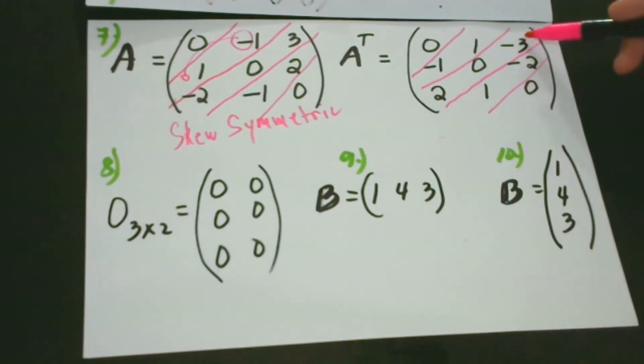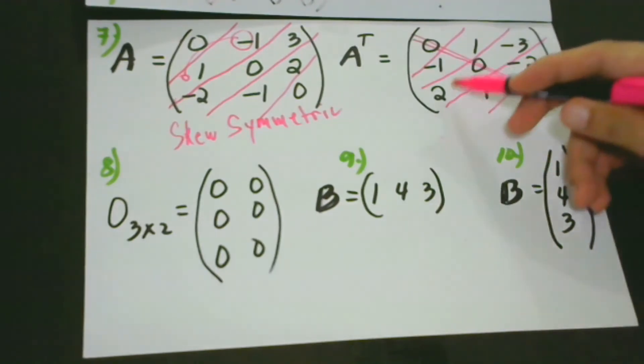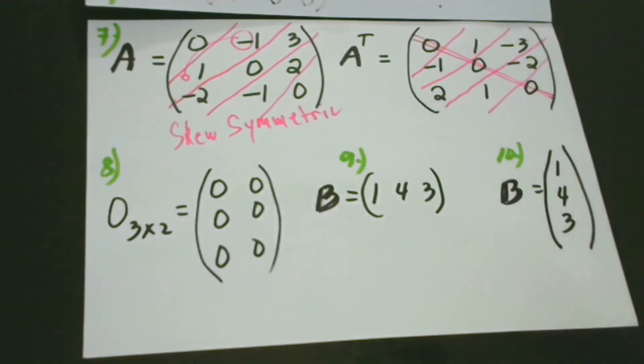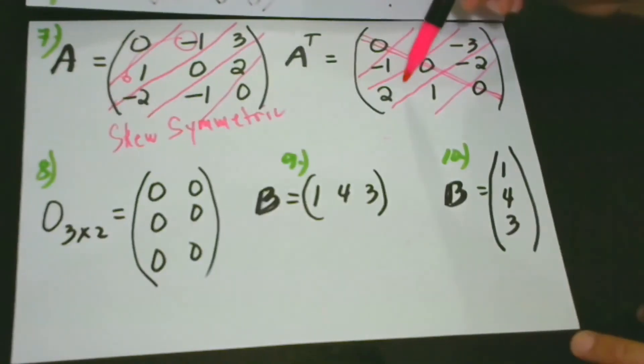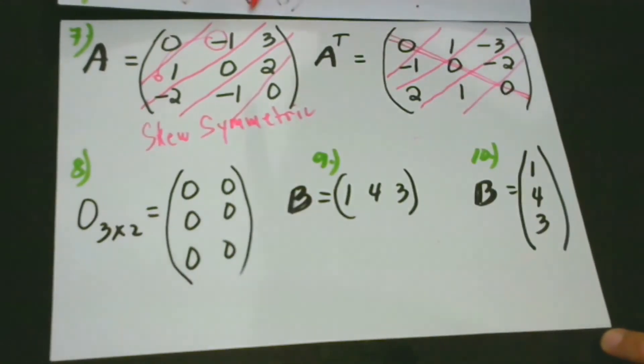The same thing happens here. Two, then negative three. Of course, we will never change anything here on the diagonal. What matters most is here, outside the diagonal. Negative three, two, two from the original negative two, then three. Here, it is negative two, and then one here from the original two and the negative one. And of course, zero. That is the skew symmetric matrix.